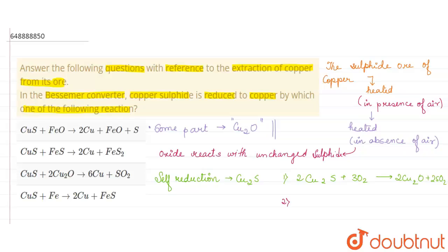In the second part we find that 2Cu2O that is formed reacts with the Cu2S to give us the blister copper that is 6Cu plus SO2.